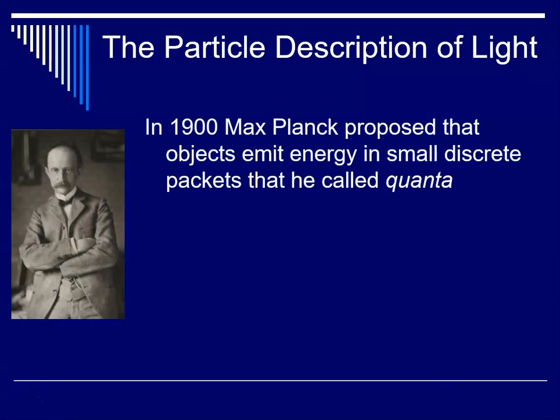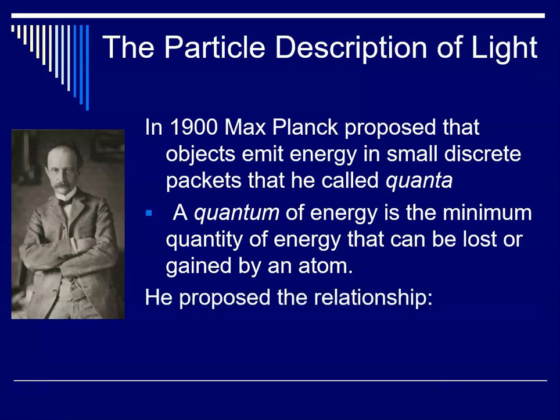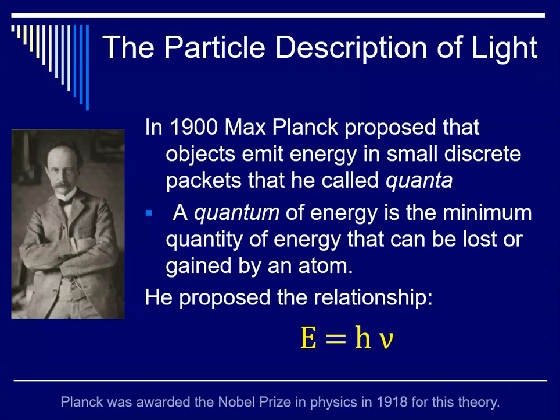So this fellow, Max Planck, proposed in 1900 that objects emit energy in small discrete packets that he referred to as quanta. And a quantum of energy, singular, is the minimum quantity of energy that can be lost or gained by an atom. And he proposed the following relationship, that E, the energy of one of these photons, is equal to h, a constant, times nu, the frequency. And he was awarded the Nobel Prize in physics in 1918 for this theory of quanta of energy.